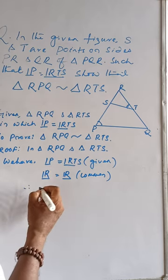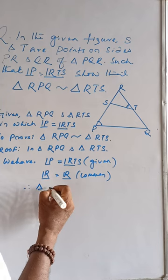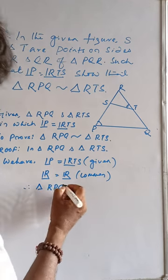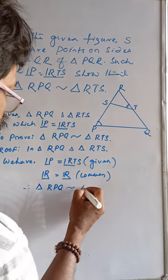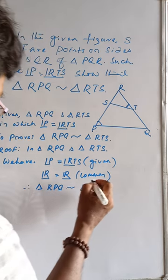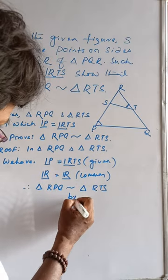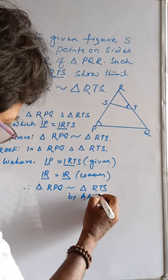Then, triangle RPQ is similar to triangle RTS by angle-angle similarity.